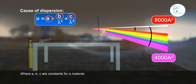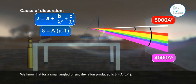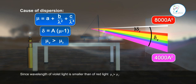We know that for small angle prism, deviation produced is δ = A(μ - 1). Since wavelength of violet light is smaller than that of red light, μᵥ > μᵣ.